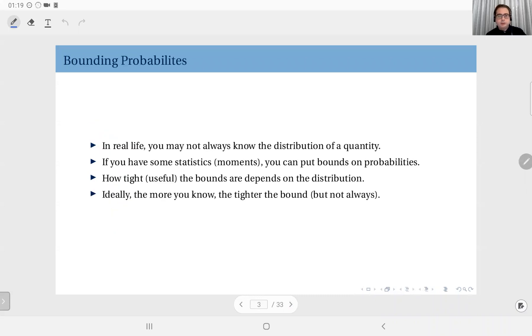Why do we need bounds on probabilities? Because in real life we do not always know the distribution of a quantity we would like to analyze. We may not be able to compute exact probabilities, but with some methods we can put upper bounds on probabilities. If you have some statistics like the mean value or the variance you can do this, but it depends on the behavior of the distribution and the actual values of the moments.